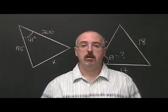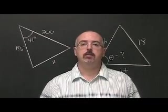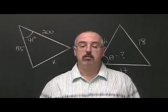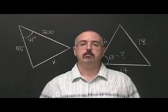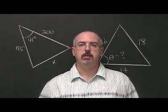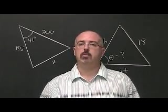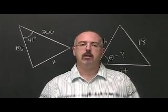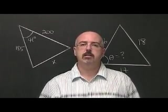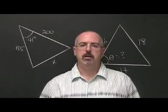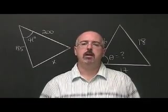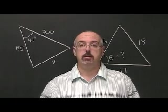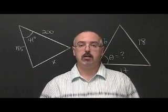We learned how to use sine law to solve for a missing side or a missing angle in a triangle that is not a right triangle. With sine law, you always know at least one side-angle opposite pair. A side-angle opposite pair would be knowing both side A and angle A opposite to it, or knowing both side B and angle B.